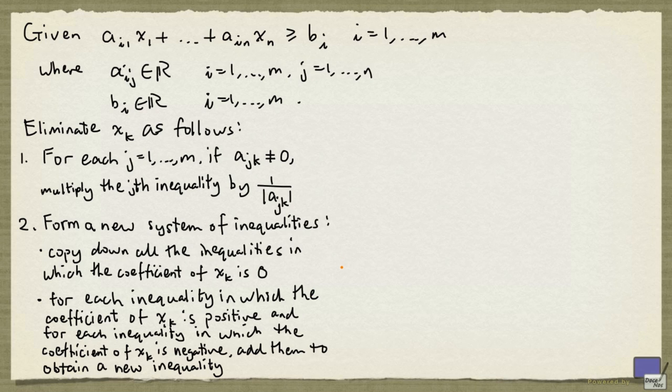The key is that the new system will have a solution if and only if the original system does. This procedure can be applied repeatedly, so we can eliminate iteratively x1 up to xn until we get down to 0 variable.